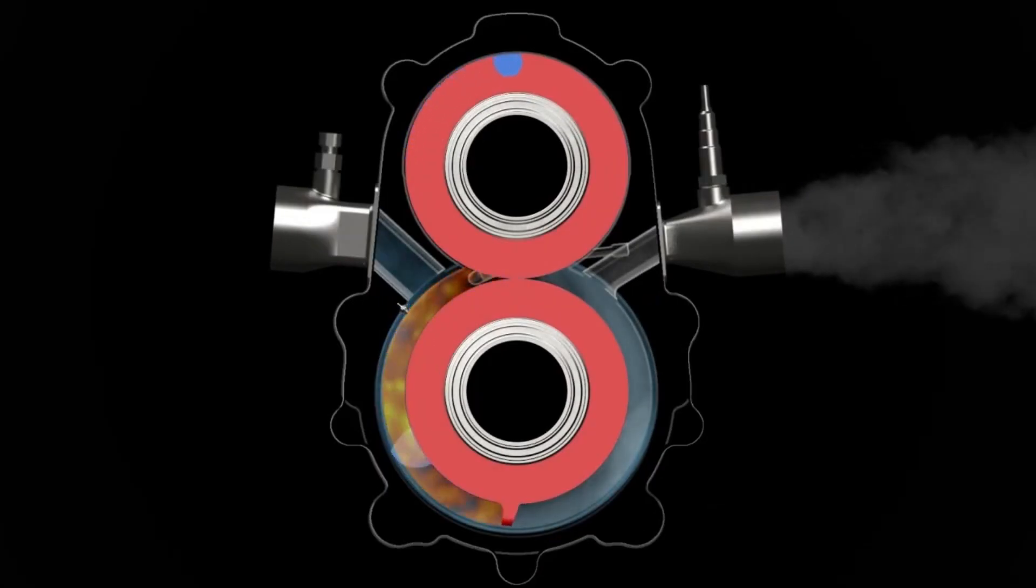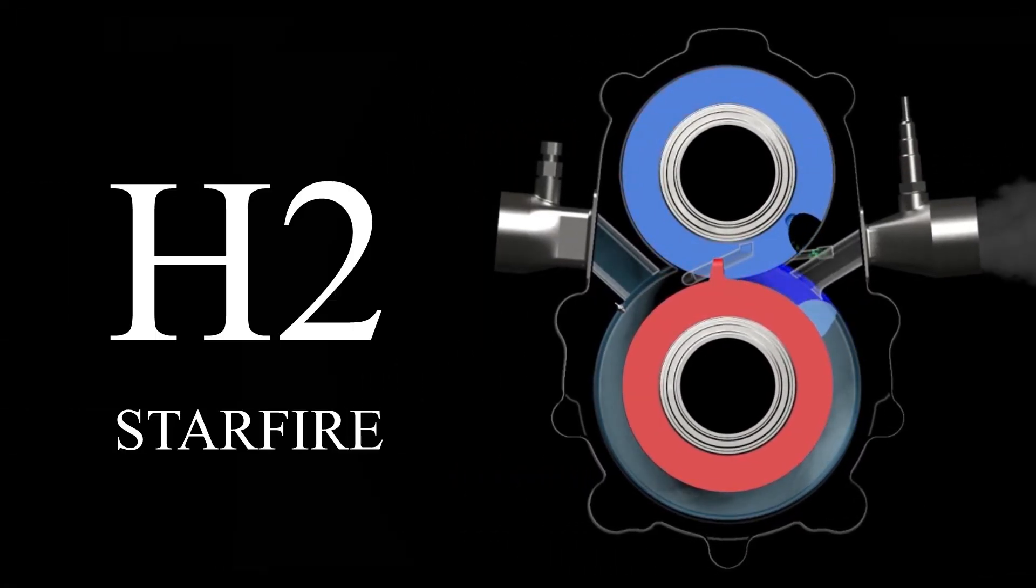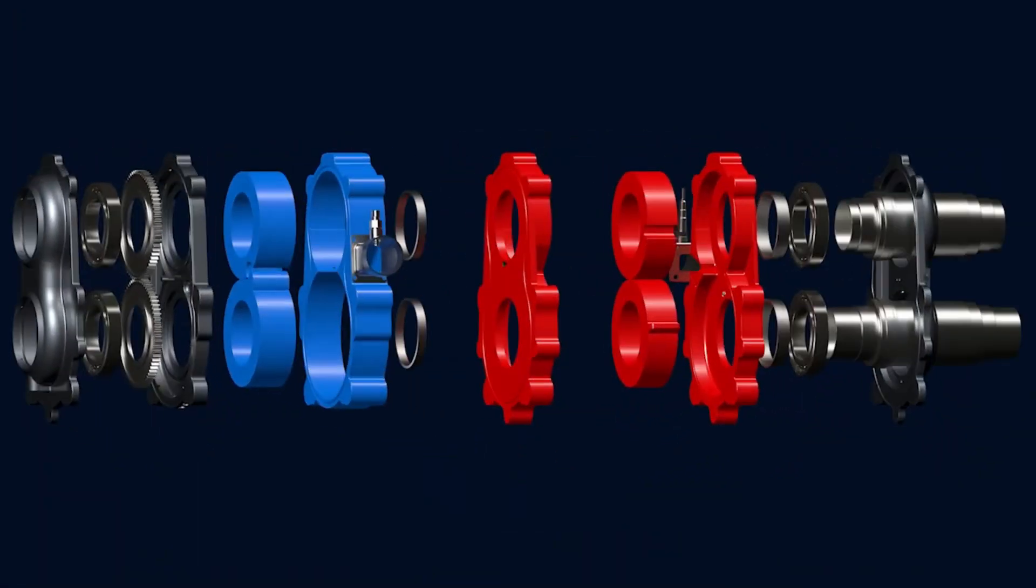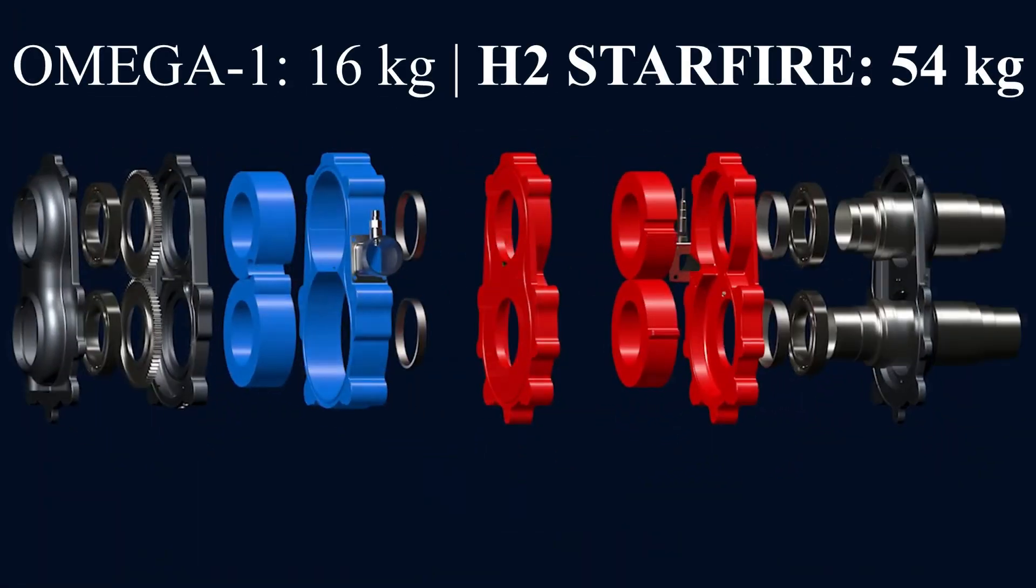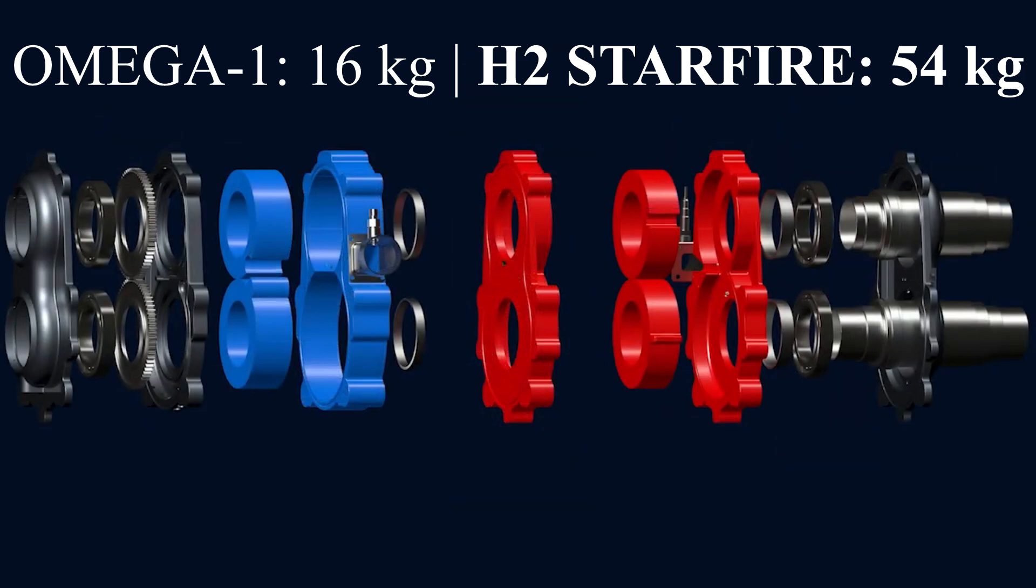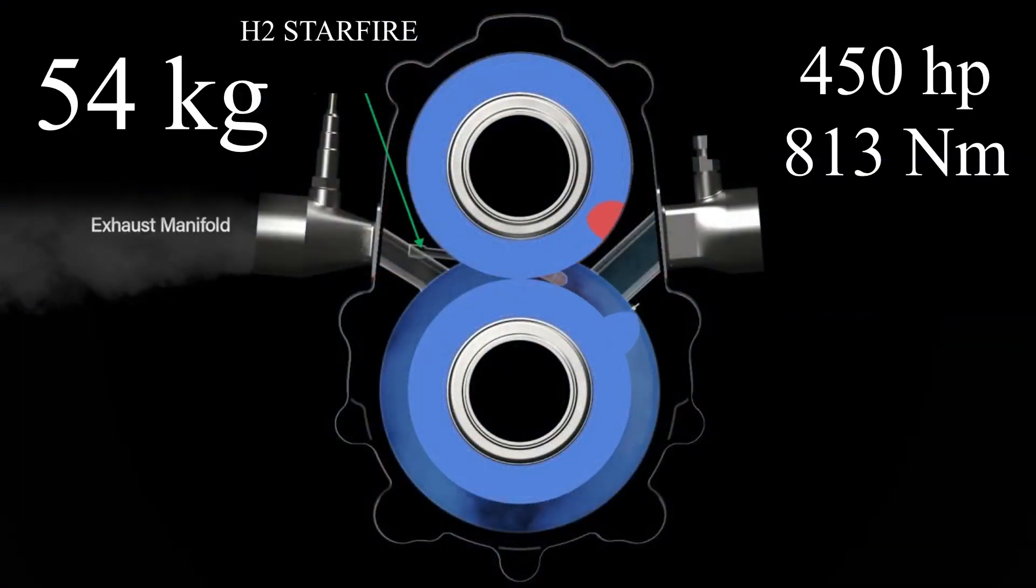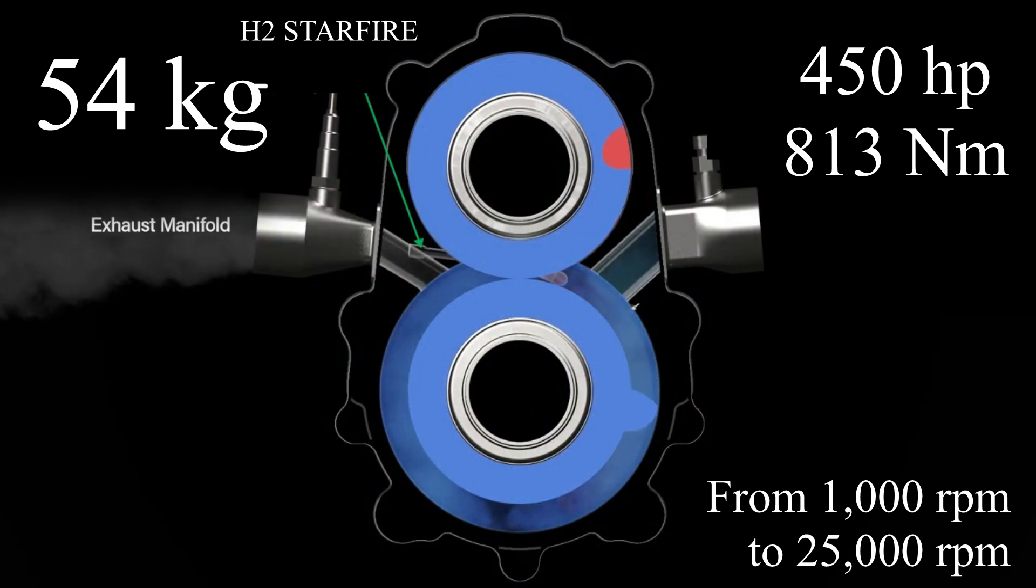But now another version has appeared, which has been in development for more than three years. It's called the H2 Starfire, and it's in its fourth generation. H2 Starfire weighs 54 kilograms, with power increased to 450 horsepower and torque exceeding 813 newton meters.